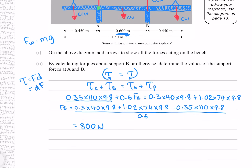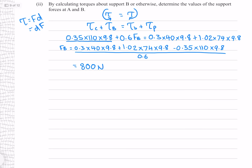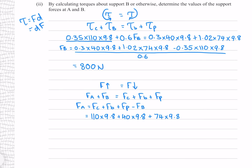To find the force from support A, we use the second equilibrium condition: the net force equals zero, meaning upward forces equal downward forces. The upward forces are from both supports and the downward forces are from the weight forces. Subtracting F_B of 800 newtons from the total weight gives F_A equals 1400 newtons to three significant figures.